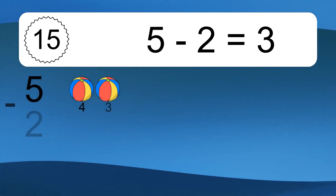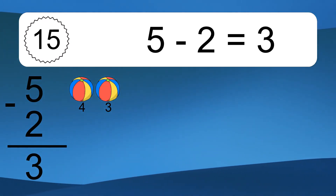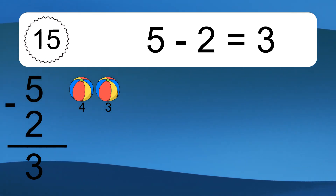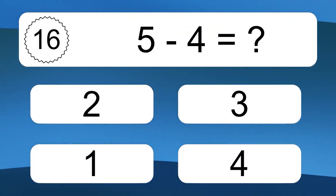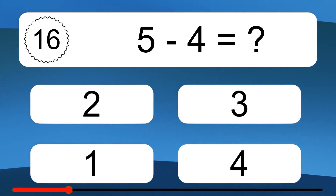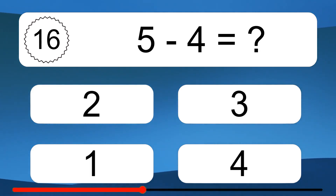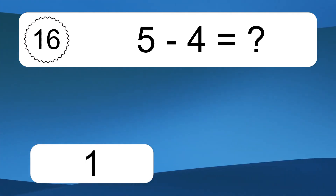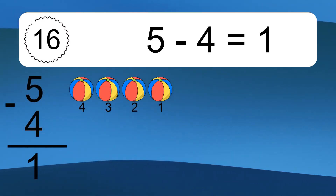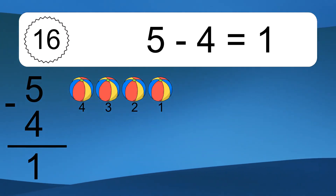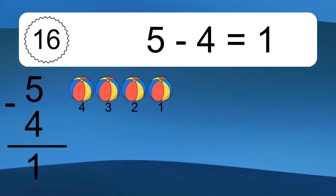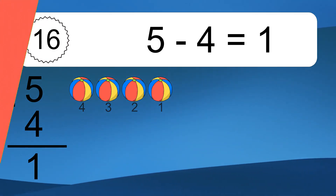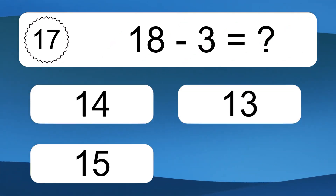5 minus 2 equals what? 5 minus 2 equals 3. Let's count it: 4, 3. 5 minus 4 equals what? 5 minus 4 equals 1. Let's count it: 4, 3, 2, 1.